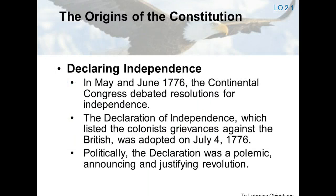In May and June of 1776, the Continental Congress began debating resolutions about independence. Richard Henry Lee moved that these United States are and of right ought to be free and independent states. On July 2, Lee's motion was formally approved. The Declaration of Independence, written primarily by Thomas Jefferson, was adopted two days later. The Declaration was a political polemic, announcing and justifying a revolution. Today it is studied more as a statement of philosophy.